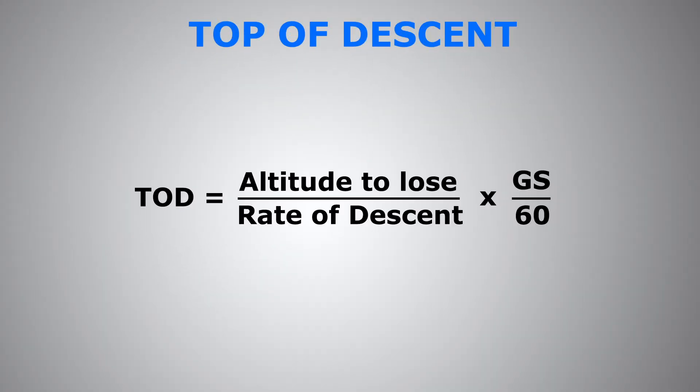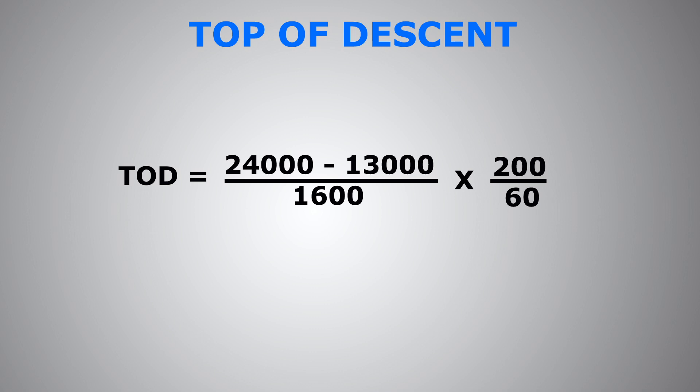Here is the formula. We're flying 24,000 feet minus descent altitude 13,000 feet divided by 1600 feet times ground speed over 60. It gives us 23 nautical miles.